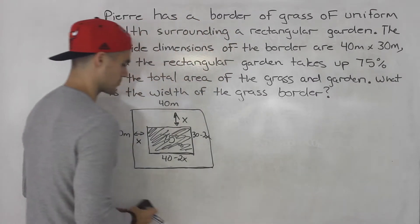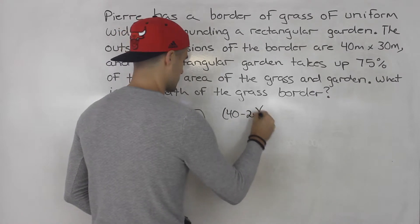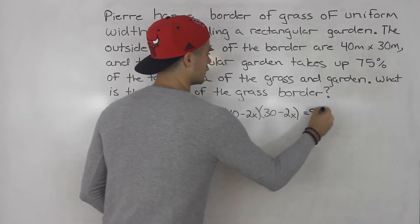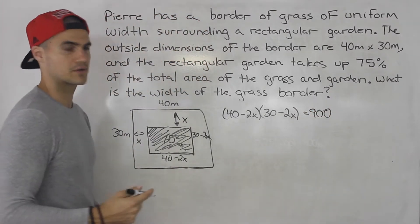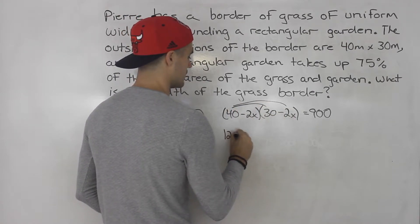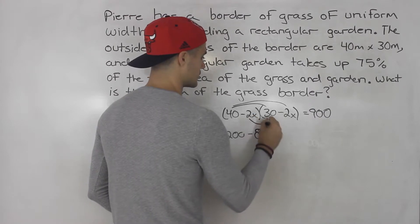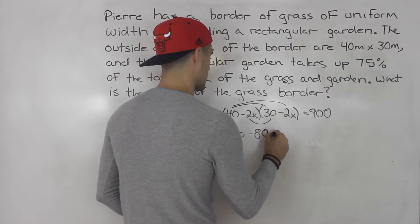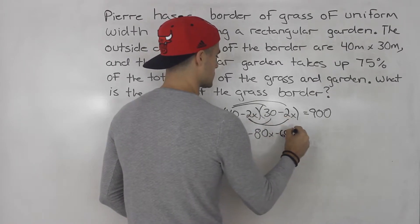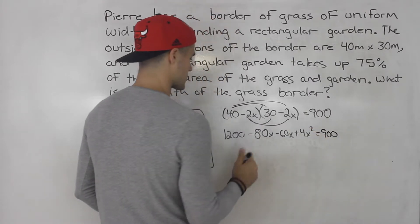So at this point we just take 40 minus 2x the length of the rectangular garden times 30 minus 2x and just make it equal to 900. And now we can solve for x. So we can foil this out. So 40 times 30 is 1200, 40 times negative 2x is negative 80x, negative 2x times 30 is negative 60x, and then negative 2x times negative 2x is positive 4x squared. And this is 900.